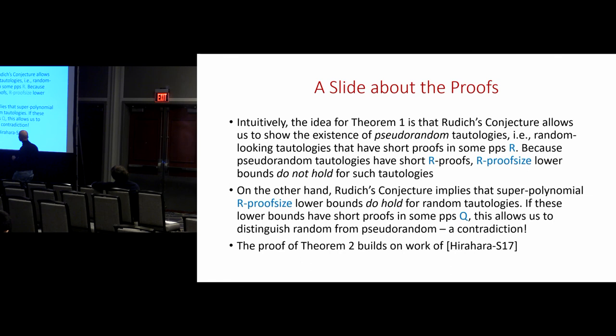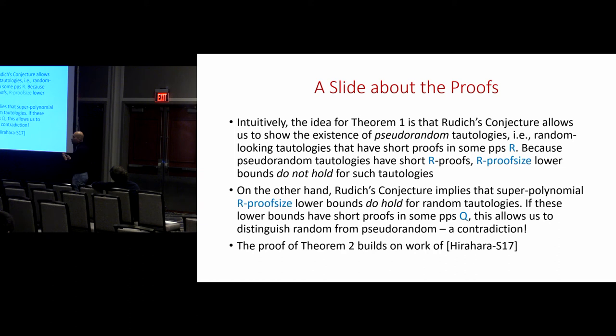There's a short slide about the proofs, but I won't get into detail for lack of time. The essential idea is to use some notion of pseudorandomness — Rudich's conjecture concerns pseudorandomness against nondeterministic adversaries, and that perspective is useful in establishing theorems one and three. The proof of theorem two builds on work I did with Shuchi Hirahara on the minimum circuit size problem and reductions to that problem.